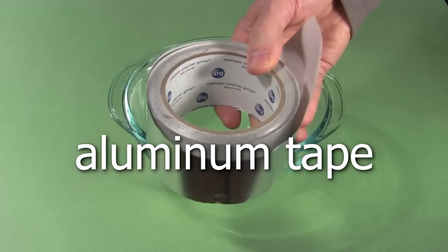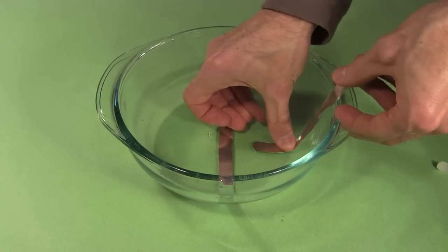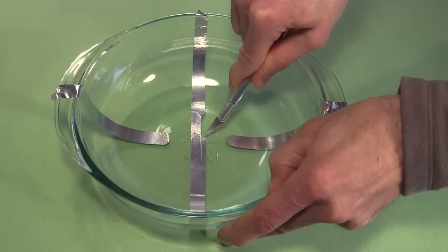If you have aluminum tape, which you can get at most hardware stores, then you can use that instead of taping aluminum foil on, like I showed earlier. It's much easier to make this way.